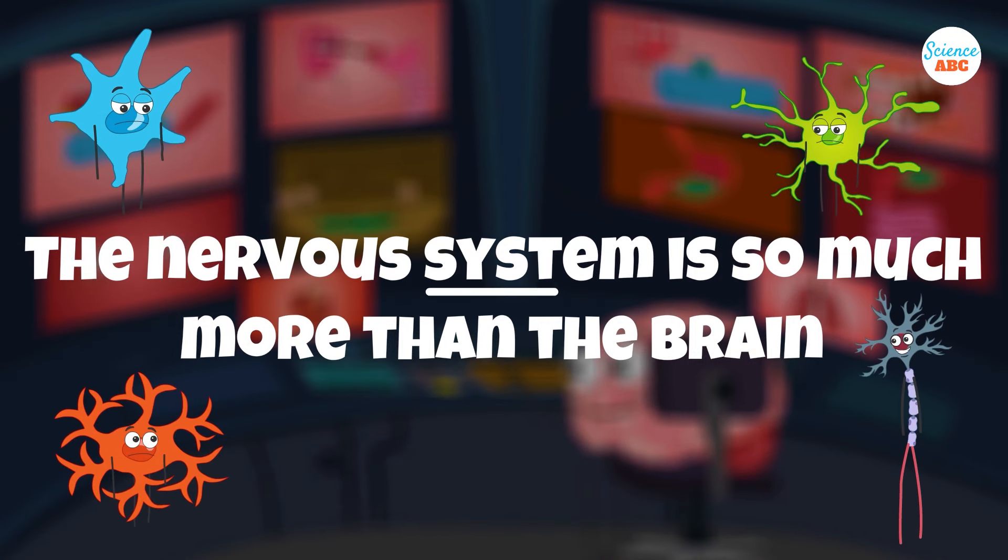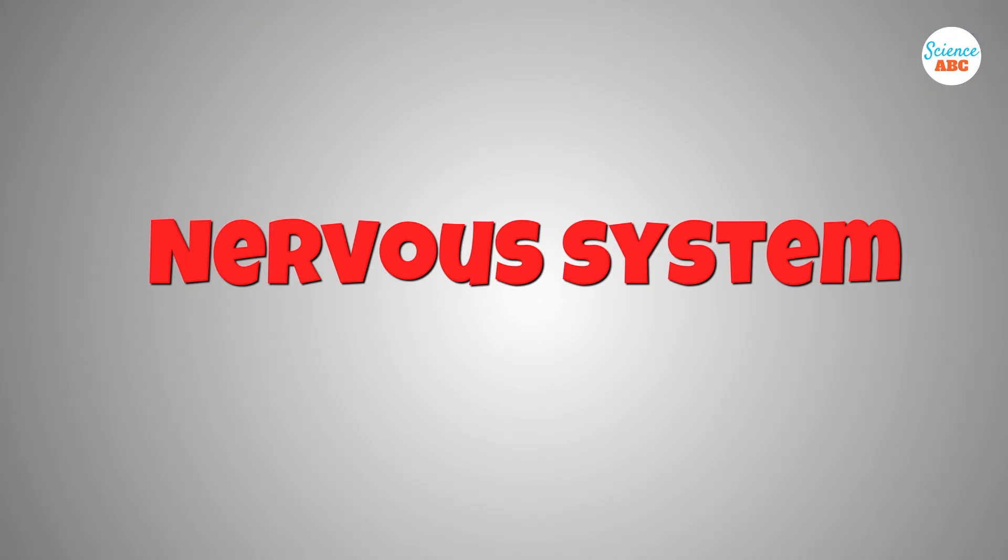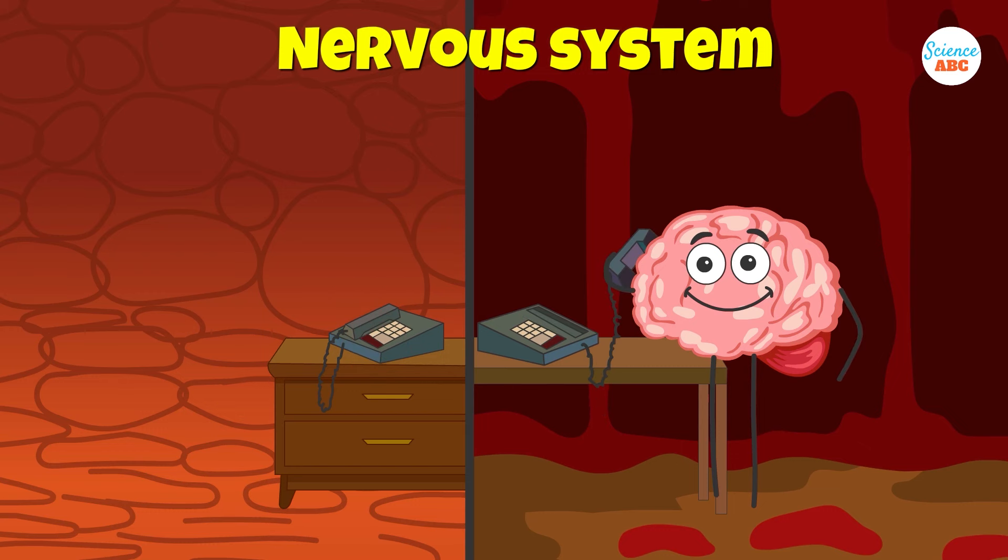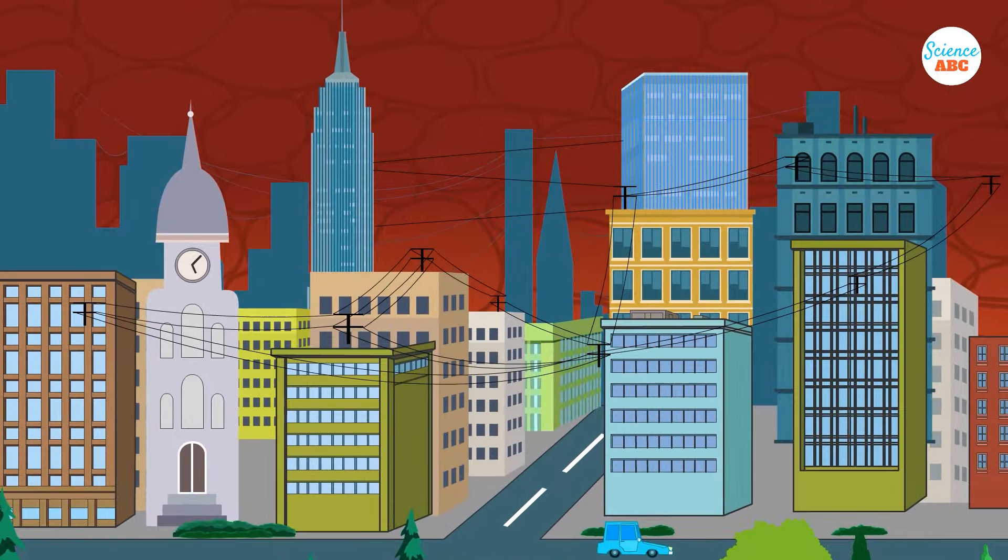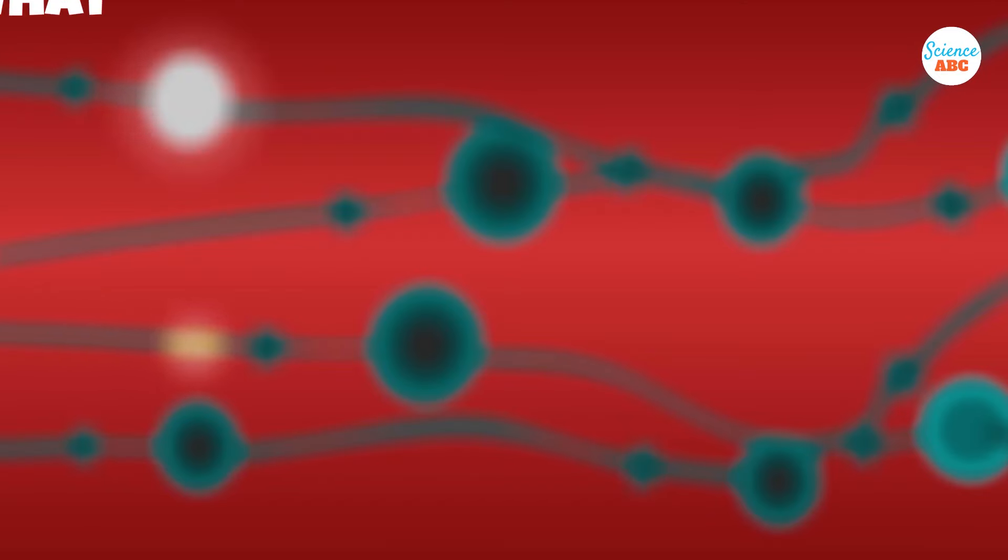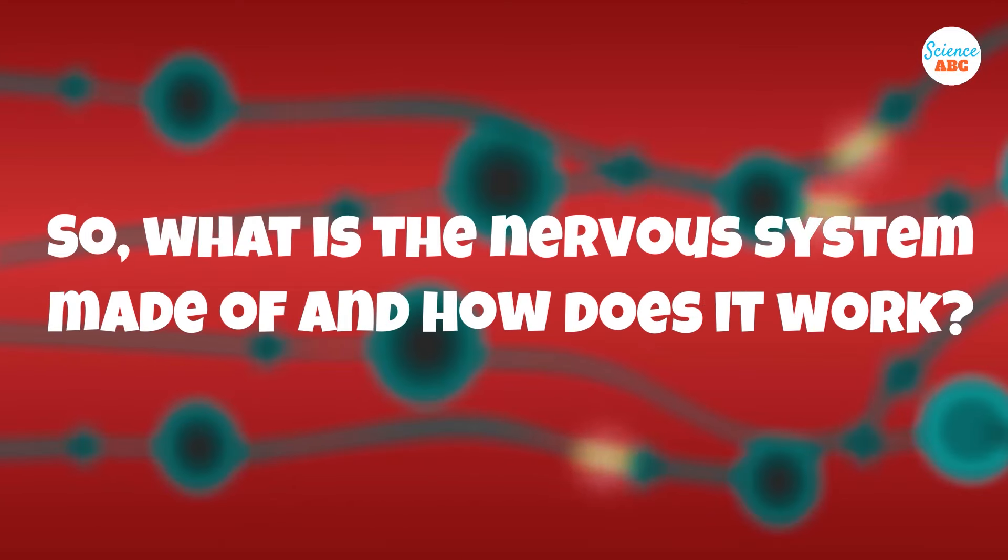The nervous system is so much more than the brain. It is a system, after all, whose main job can be simplified to this: communication from one part of the body to another, like telephone wires that help us communicate across districts, cities, countries, and oceans. So, what is the nervous system made of, and how does it work?